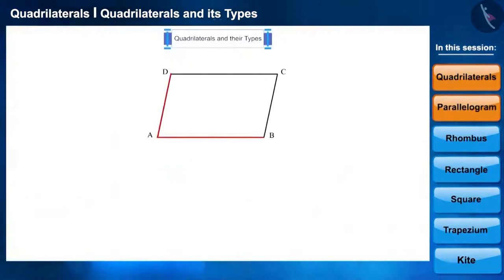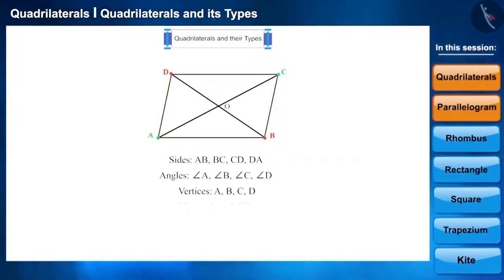Friends, a quadrilateral has four sides, four angles and four vertices. Line segments formed by joining opposite vertices are called the diagonals. All quadrilaterals have two diagonals.